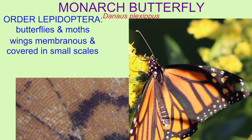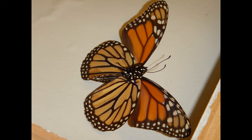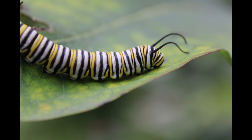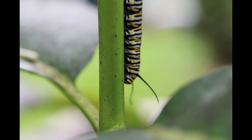Within insects, monarch butterflies are classified in the order Lepidoptera with other butterflies and moths, due to features such as membranous wings covered in small scales — the literal translation of Lepidoptera being 'scale wing.' The forewing is larger than the hind wing, and they undergo complete metamorphosis, going through a caterpillar stage and then a pupal stage before becoming adults.